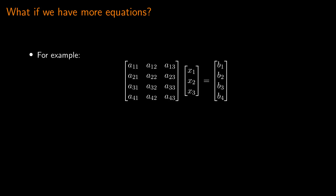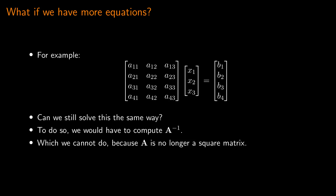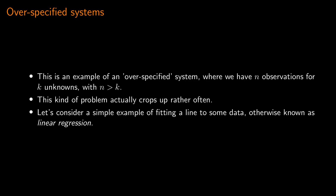But what would happen if we had more equations than unknowns? In that case, our system might have four equations in only three unknowns. We would have to compute the inverse of A, which we cannot do because we can only compute the inverse of square matrices, and A is no longer square. This is an example of what is known as an over-specified system, where we have n observations for k unknowns with n greater than k. Problems such as this crop up rather often. Let's consider an example involving fitting a line to some data — a process otherwise known as linear regression.